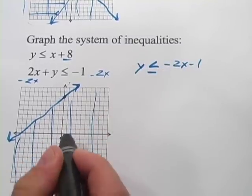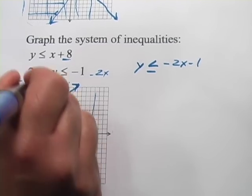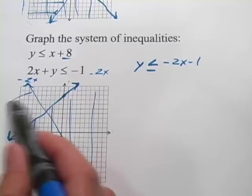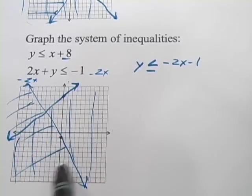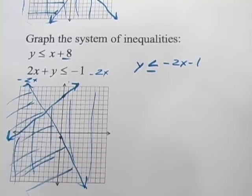So that's got a y-intercept of minus 1. It's got a slope of negative 2, so down 2 and over 1. So it'll look something like that. And that's y is less than, so it's the area below. And then where these two overlap is this region right in here. And that is our solution.